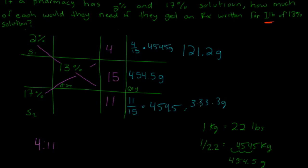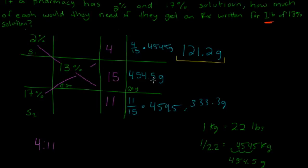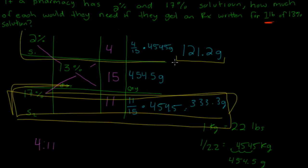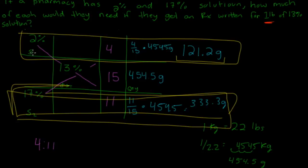When you add these two numbers up, you get 454 grams. This is saying we need 121.2 grams of the 2% solution mixed with 333.3 grams of the 17% solution to get 1 pound (454.5 grams) of the 13% solution. Remember, these numbers stay together. Reading left to right: 2%, you need that much to get that desired quantity. That is how you do allegations.